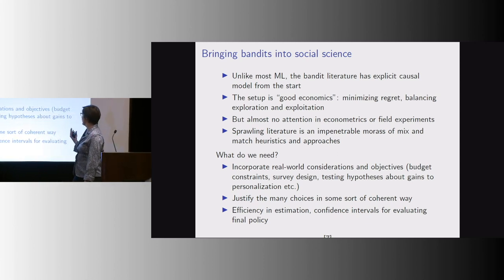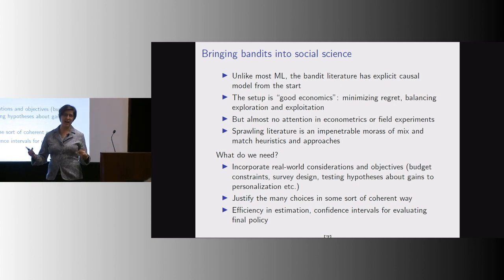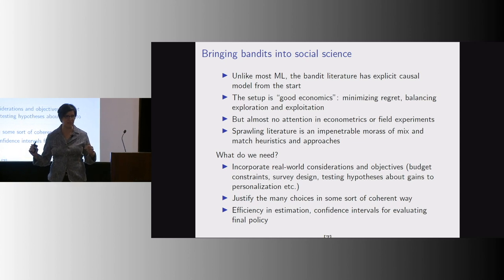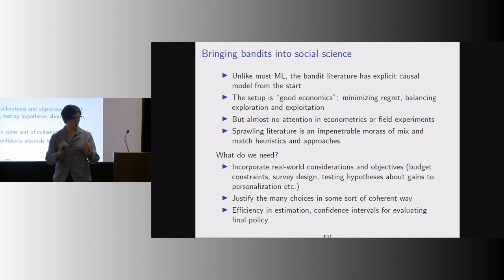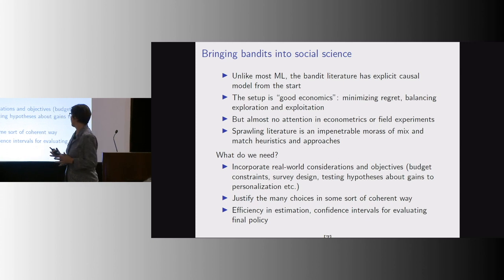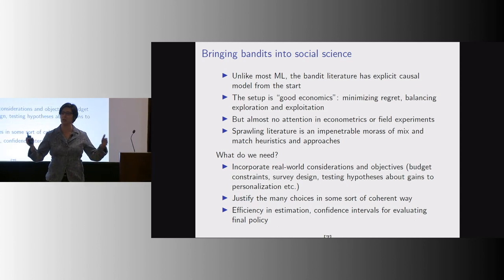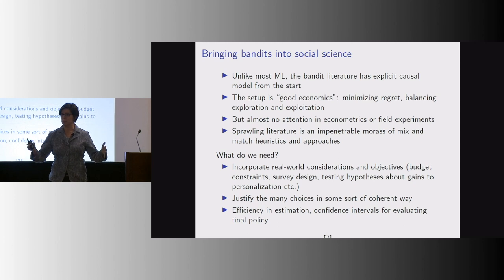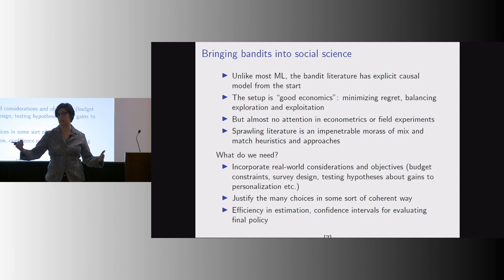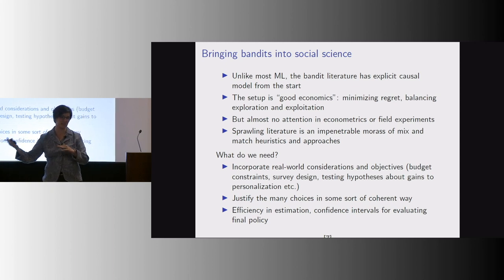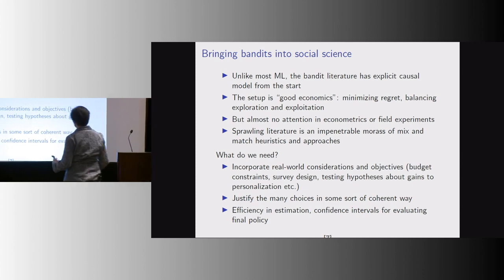First, incorporating real-world considerations and objectives. If I'm going to run an MTurk experiment, I have a budget of a couple thousand dollars — so I want to think about what's the most I can learn within a fixed budget. Also, the machine learning people focus on regret in the experiment — averaging utility of all people in the experiment — but usually my experiment is a stepping stone. So I want to put more weight on the future, on testing hypotheses at the end, and on statistical power to test an interesting hypothesis that would justify going to the next stage.